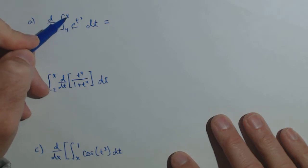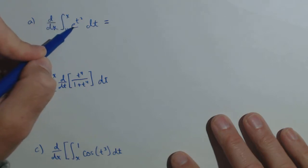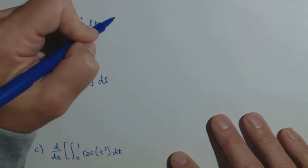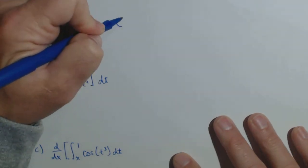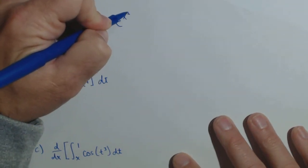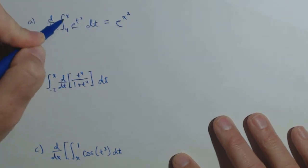we would use the antiderivative of this, plug in this upper limit and this lower limit, but then we would take the derivative of that, which would get us back to where we started, and the part where we put in the constant is gonna be zero. So very quickly, we see that this is actually just gonna be e to the x squared, as that'll be the derivative of this function.